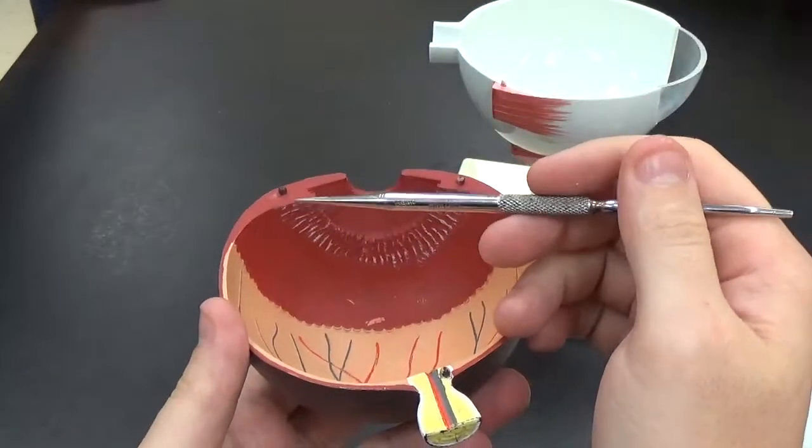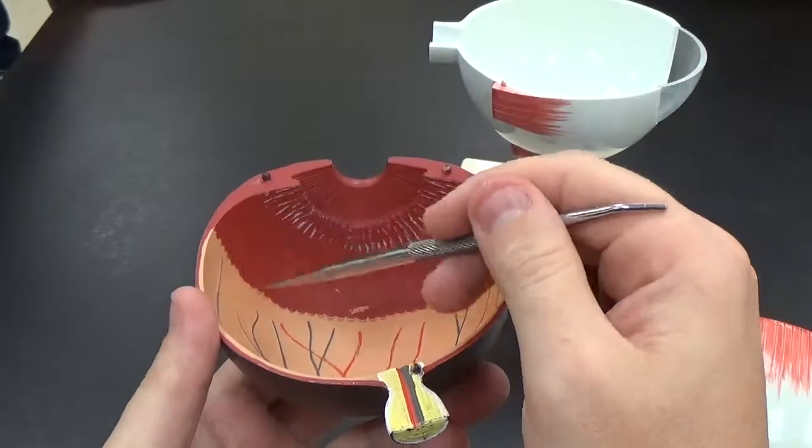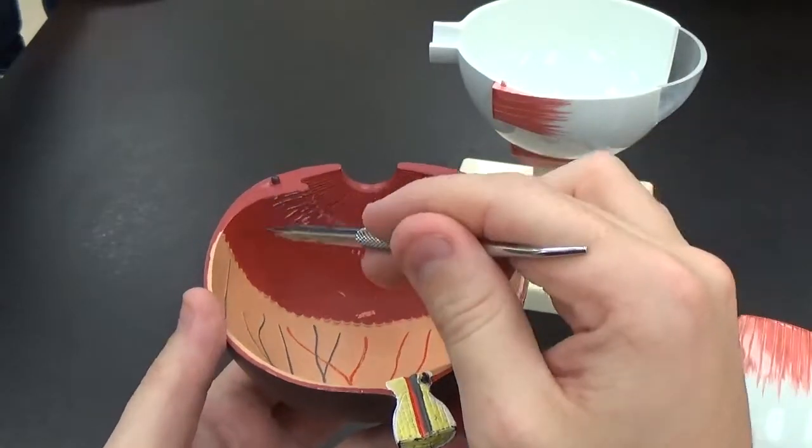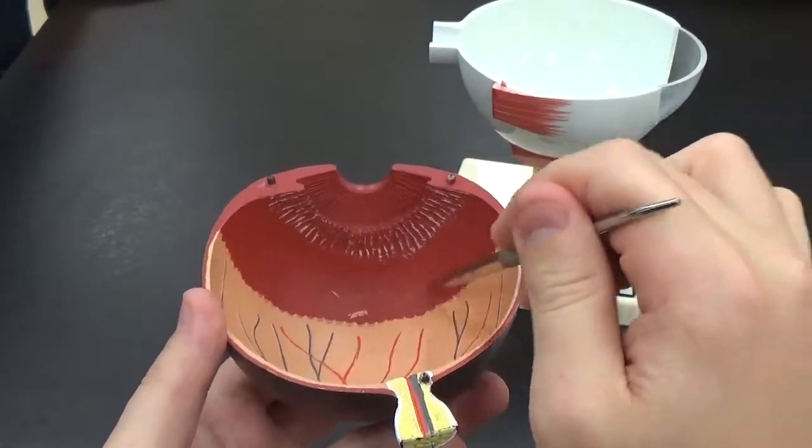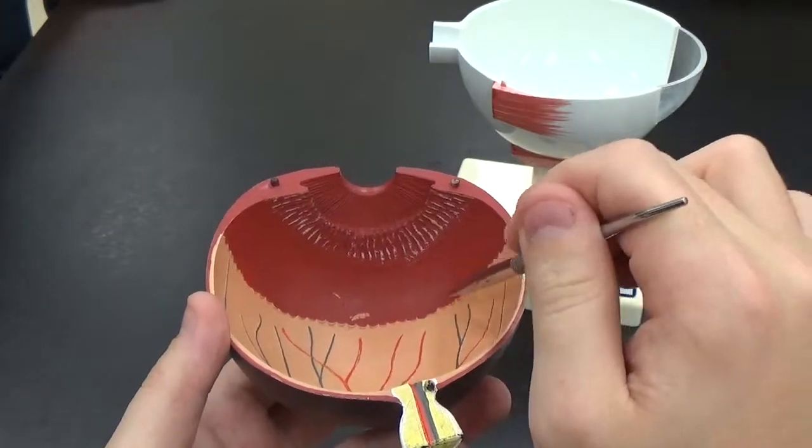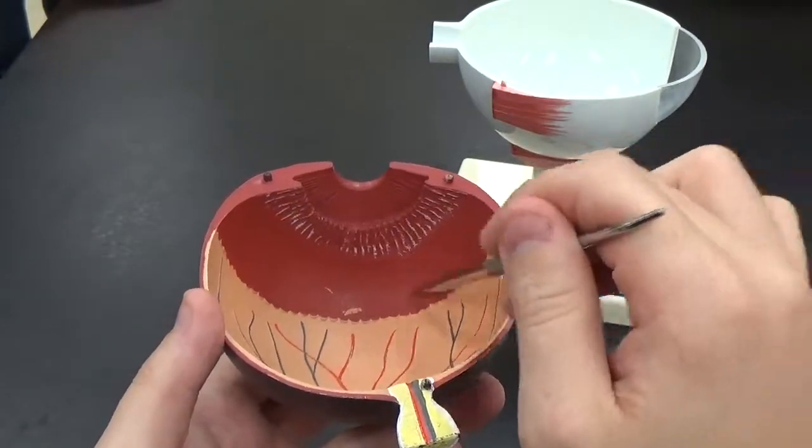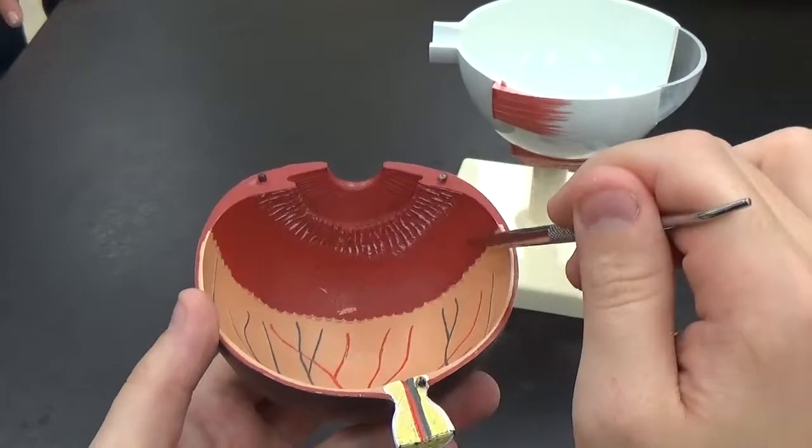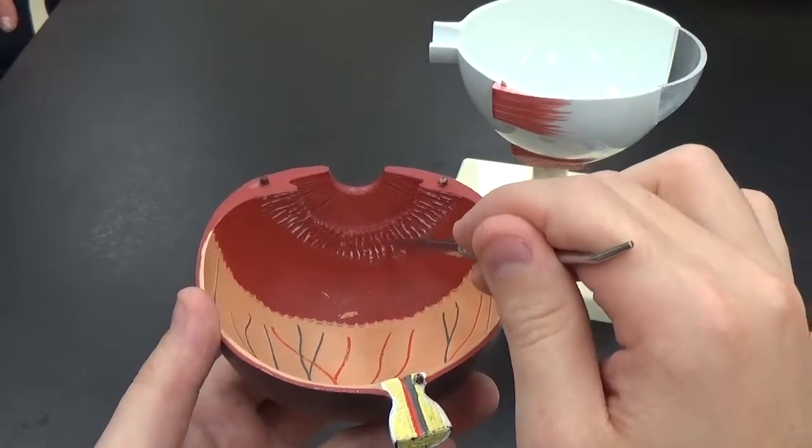We have a ciliary body. That's all this structure you're seeing here. The ciliary muscle, in this particular model, is the smoother outer layer here. It is a muscle itself which connects to suspensory ligaments.